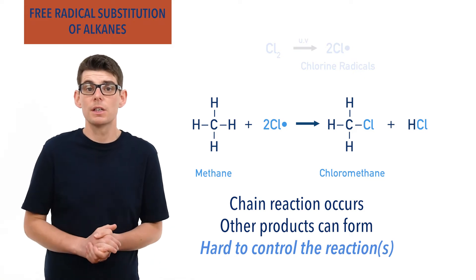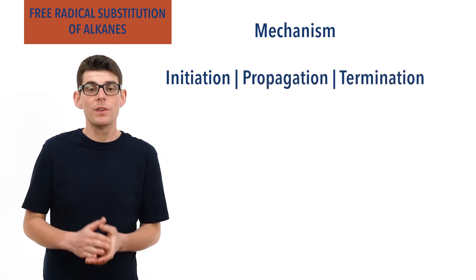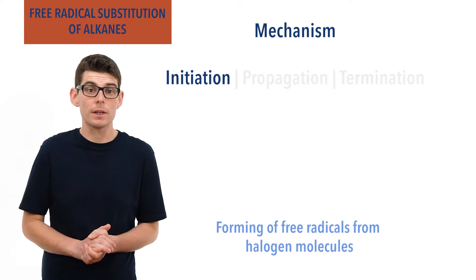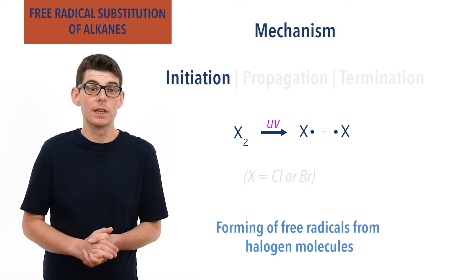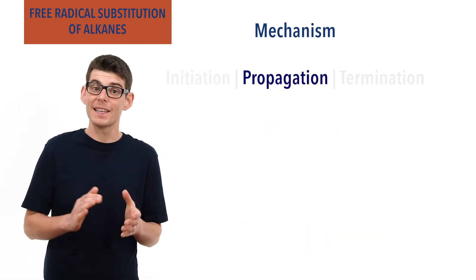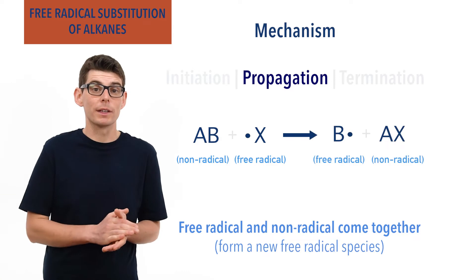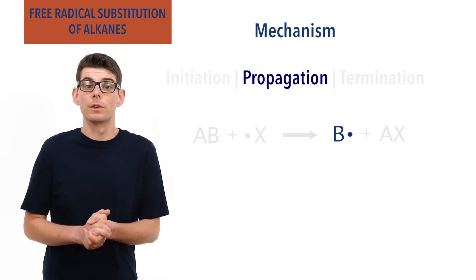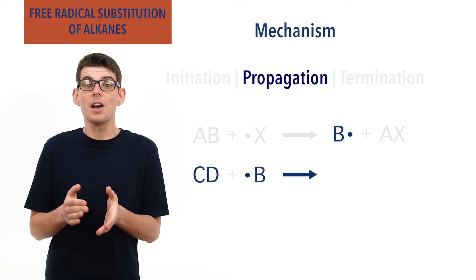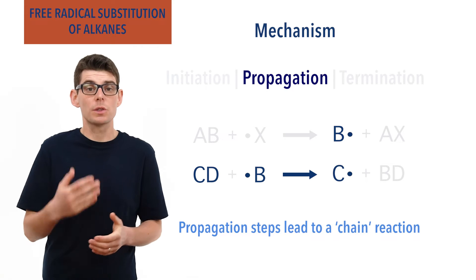The mechanism for these substitution reactions can be broken down into three steps or stages — initiation, propagation, and termination. The initiation step is the formation of the free radical; in other words, the halogen molecule undergoing homolytic fission in the presence of UV light. Propagation steps describe the coming together of a free radical and a non-radical, always producing a new free radical and non-radical molecule. These propagation steps lead to a chain reaction that goes on and on.